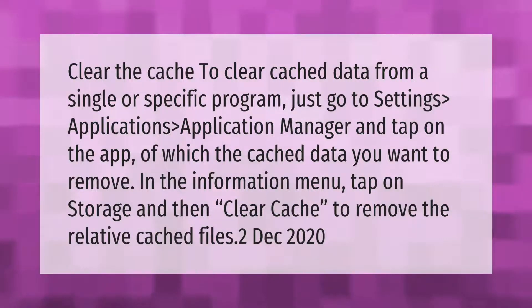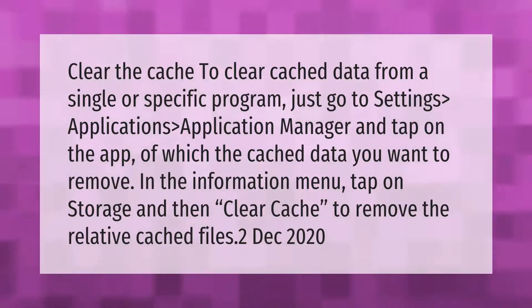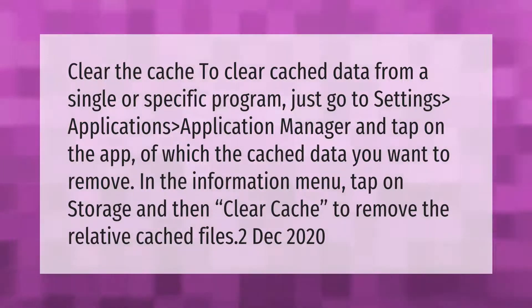To clear cache data from a single or specific program, just go to Settings, then Applications, then Application Manager, and tap on the app whose cache data you want to remove. In the information menu, tap on Storage and then